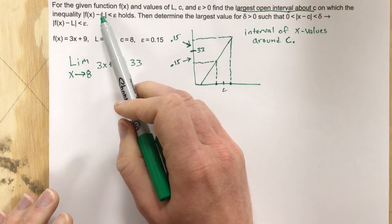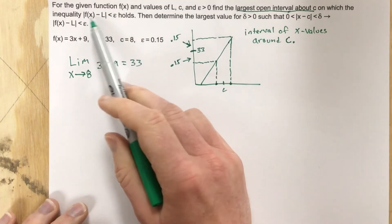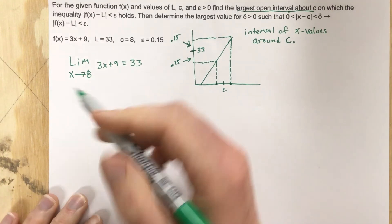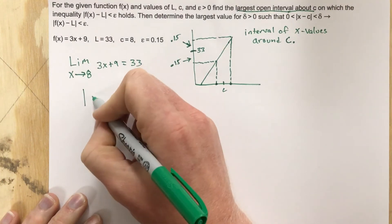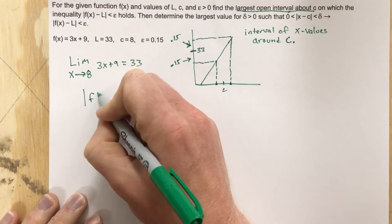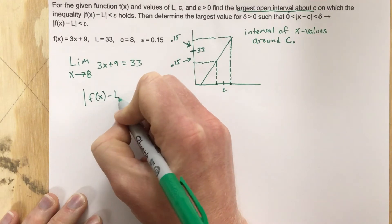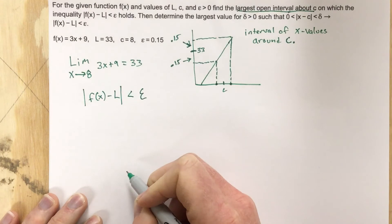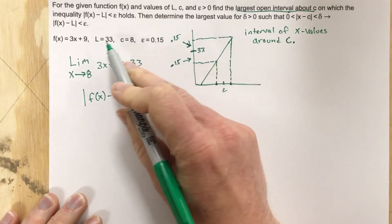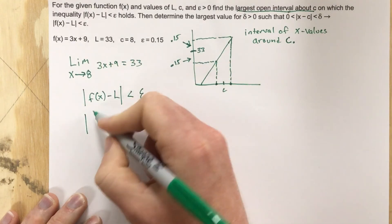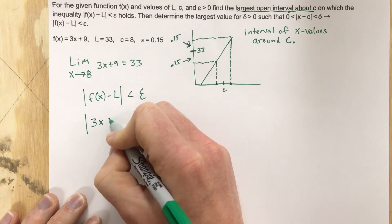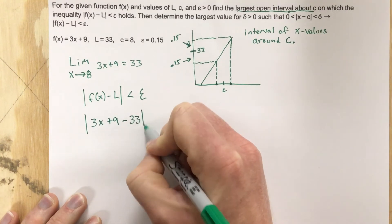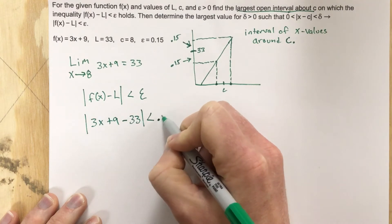We've got f of x and we've got L, so we can essentially solve that to find what x values we need. We're going to start by saying |f(x) - L| < epsilon, and plug in our information: |3x + 9 - 33| < 0.15.